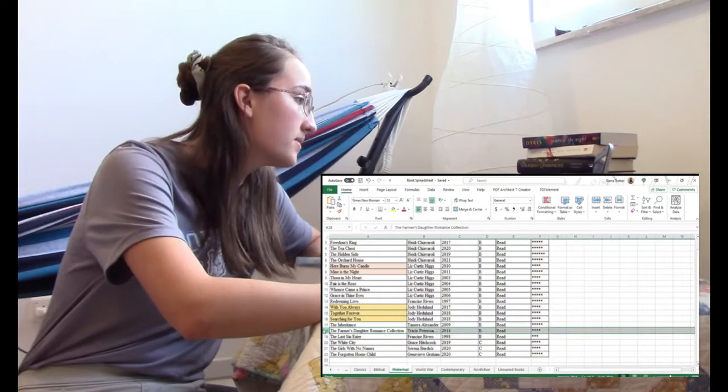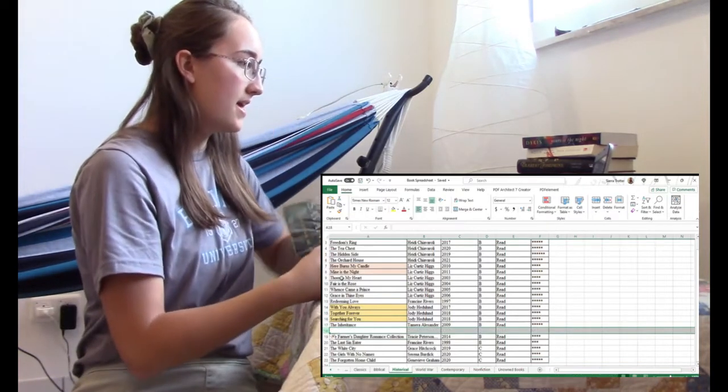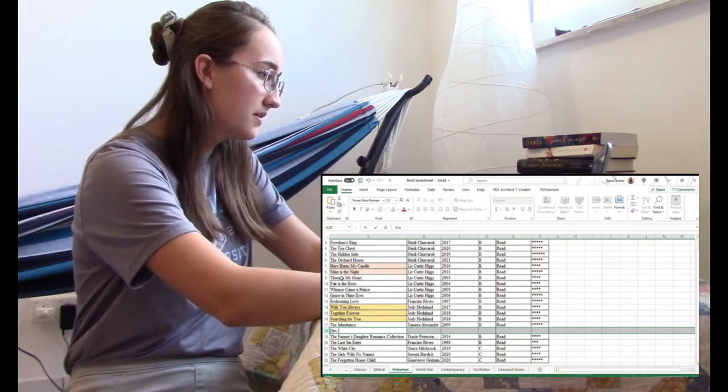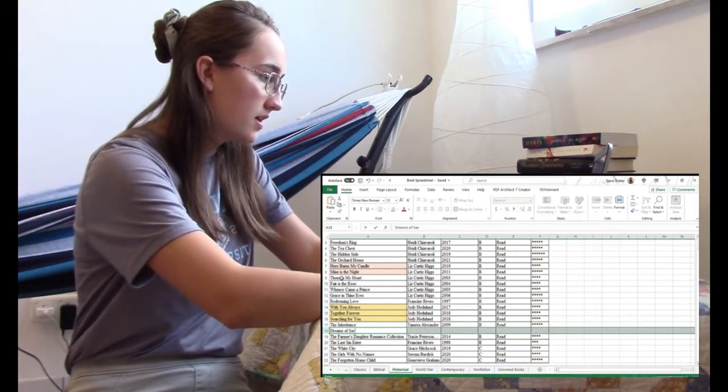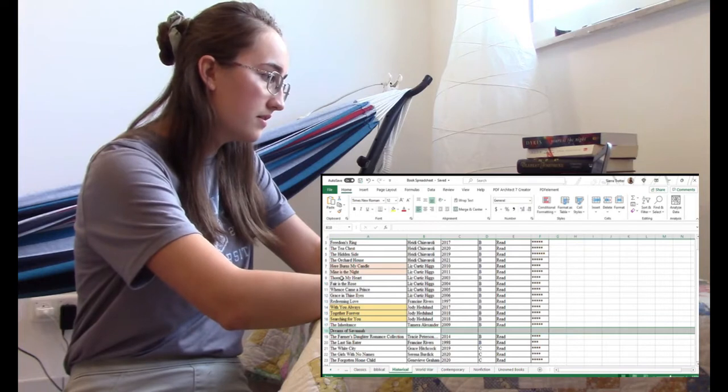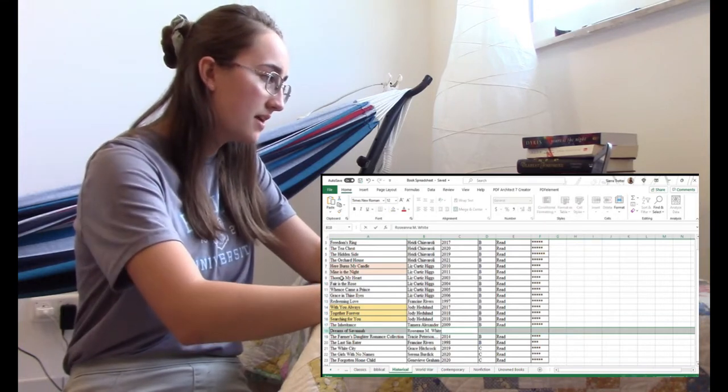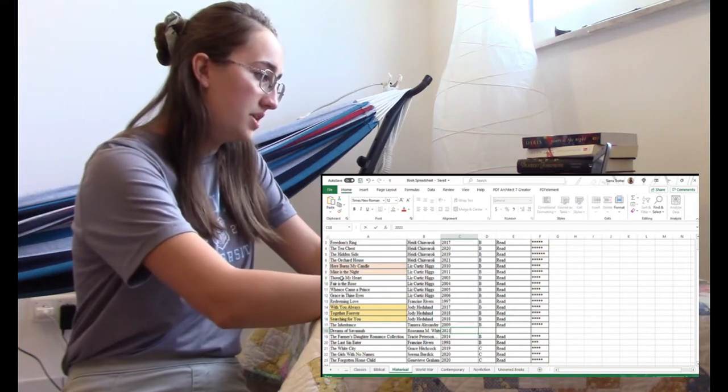And then once I've decided, I insert a column and I type in the title of the book, the author, the publication date, well year, what shelf it's on...